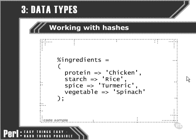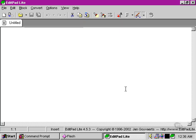However, if we wanted to use a key name for an element within the ingredients hash that had any kind of white space in it at all, we'd need to use some quotation marks to surround that so that Perl would be able to correctly interpret this initialization. Let's move over to our text editor now and have a look at some practical examples of working with hashes.